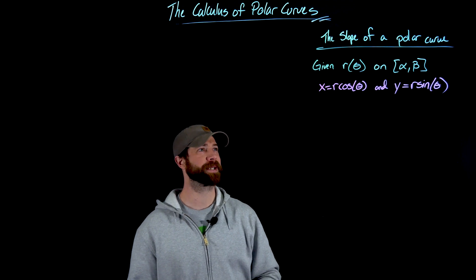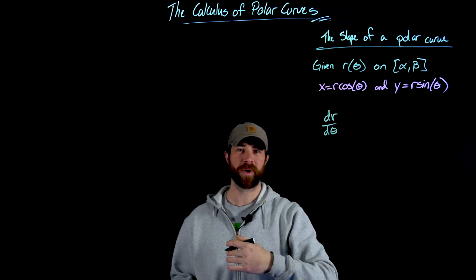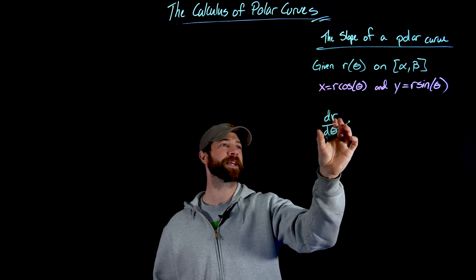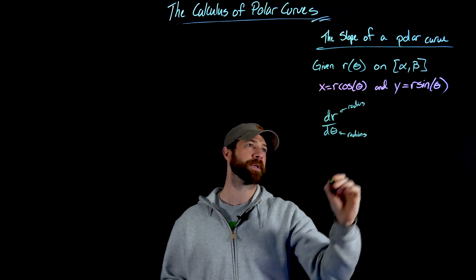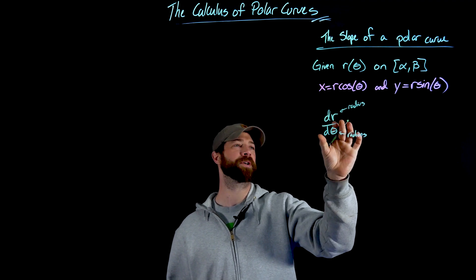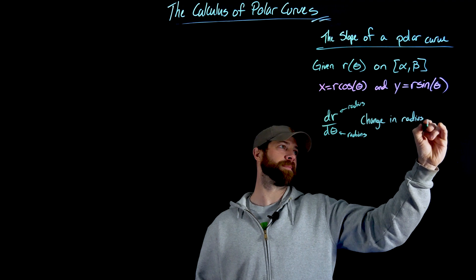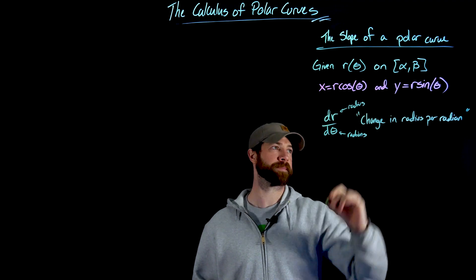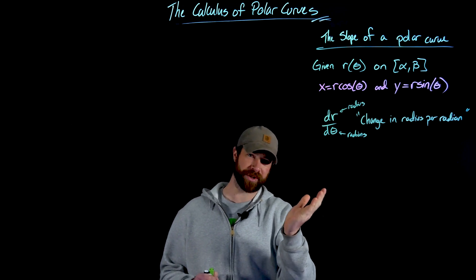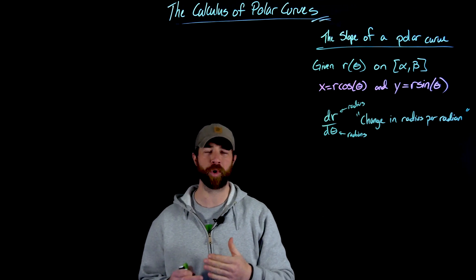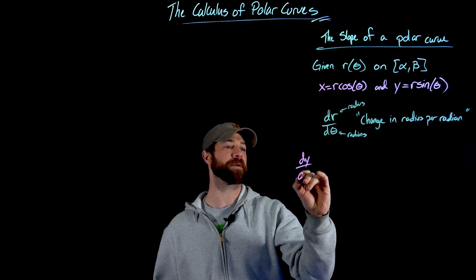The first thing you might think is that we could find dr/dθ — just take the derivative of this function with respect to the independent variable, which is what we did with normal Cartesian functions. But importantly, if you think about these units, on top you have a radius and on the bottom you have a change in radians. What dr/dθ tells you is the change in radius per radian — as you change your angle just a little bit, it tells you the change in the radius. But if we want to find the slope, we're looking to find rise over run, so we have to go back to thinking of slope as dy/dx.